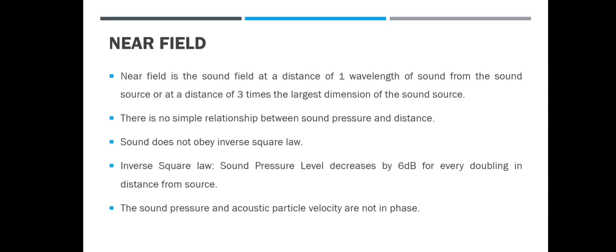The inverse square law states that the sound pressure level should decrease by six decibels for every doubling in distance from the source. For example, if the distance is currently one meter and the sound pressure level is 80 dB, doubling the distance to two meters should give 74 dB as per the inverse square law — but that doesn't hold true in the near field.